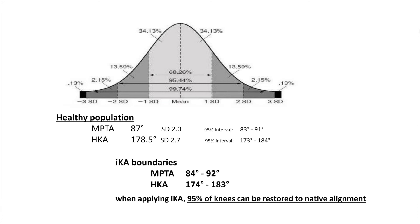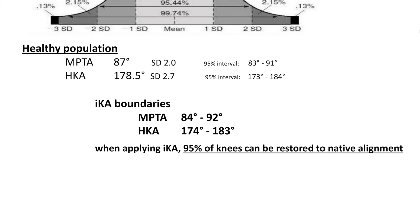The boundaries maintained in Inverse Kinematic Alignment are: for the postoperative MPTA, a maximum of 6 degrees varus (MPTA of 84) or a maximum of 2 degrees valgus (MPTA of 92). The overall postoperative HKA angle should be between 6 degrees of varus and 3 degrees valgus — a range of 10 degrees — and this target can be reached in 95% of patients without the need for any soft tissue release.